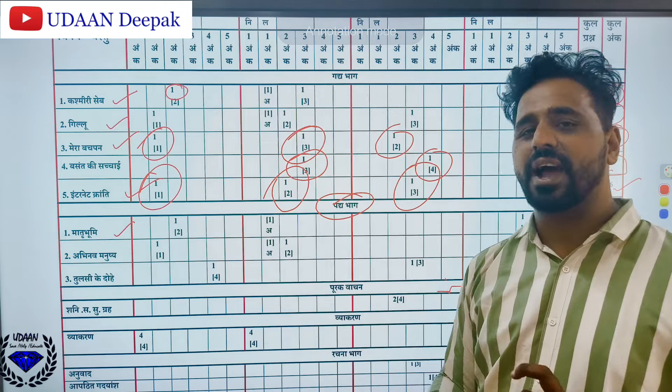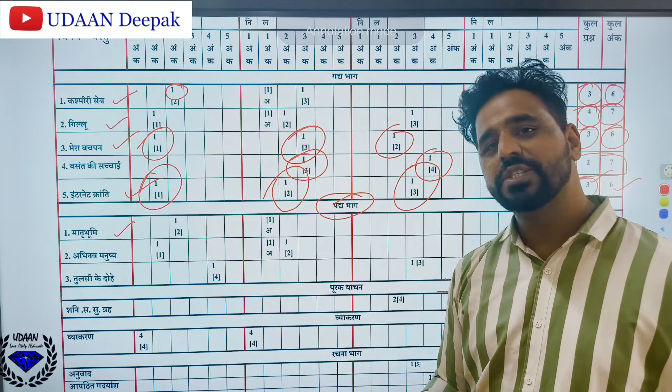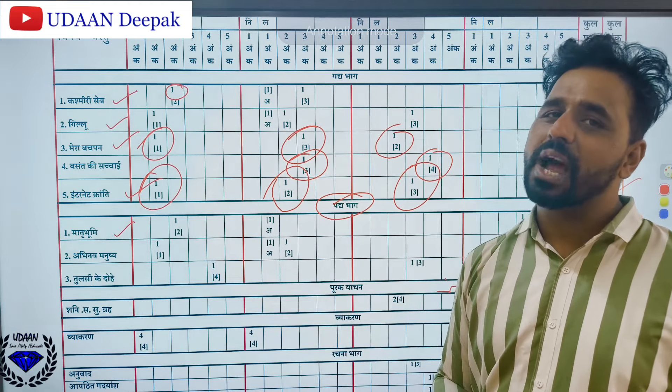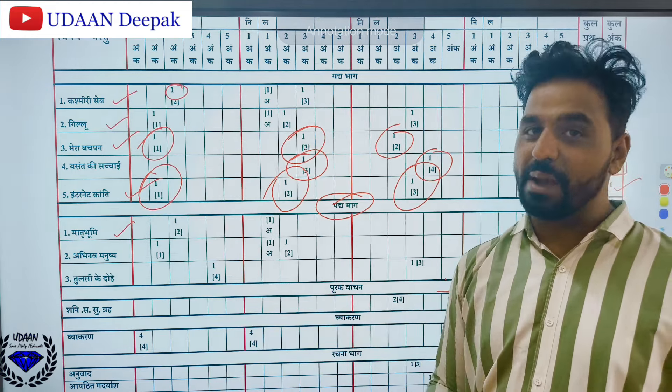Coming to the next — the poem side. You will be having Mathur Bhumi, the very first poem. In Mathur Bhumi, the second stanza is very important because that will definitely come in your examination. So total three questions you will get: one two-mark question, one three-mark question, and one objective type question. So total three questions and six marks.